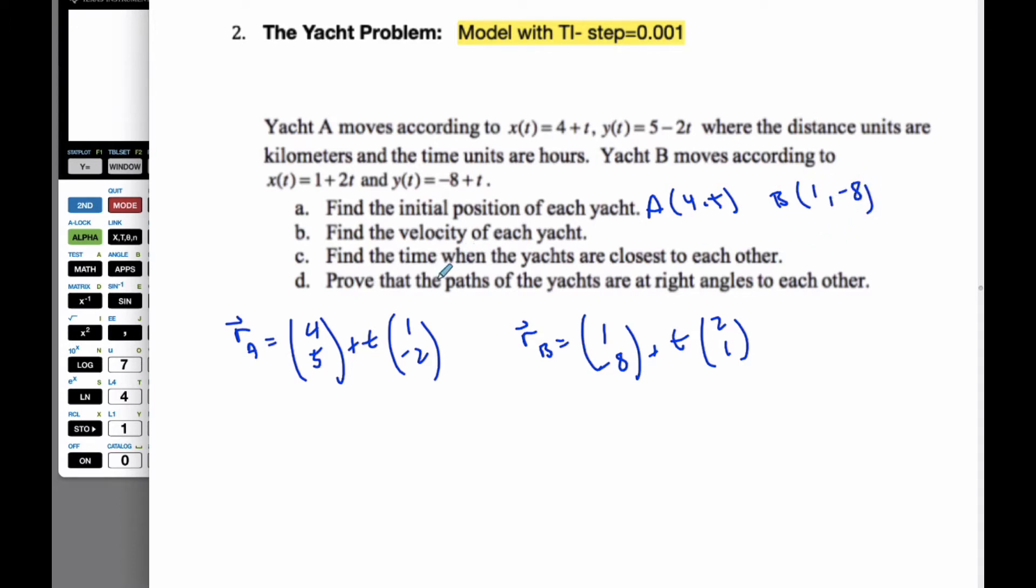The velocity of each yacht, well, in this linear equation, this is the velocity. This is the direction, and the magnitude is velocity. So the velocity of A is simply (1, -2), and the velocity of B is simply (2, 1). That feels weird that you give it as a vector, but the velocity is a vector. If it would have said the speed, then we would have given the magnitude of each vector.